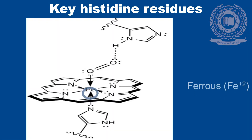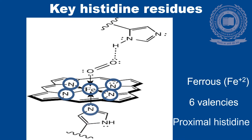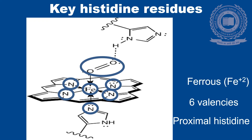The iron is present in ferrous form, so it has six valency and it can form coordinate linkage with four nitrogens of the pyrrole ring, one nitrogen of the imidazole group of histidine, and another oxygen of the molecular oxygen.